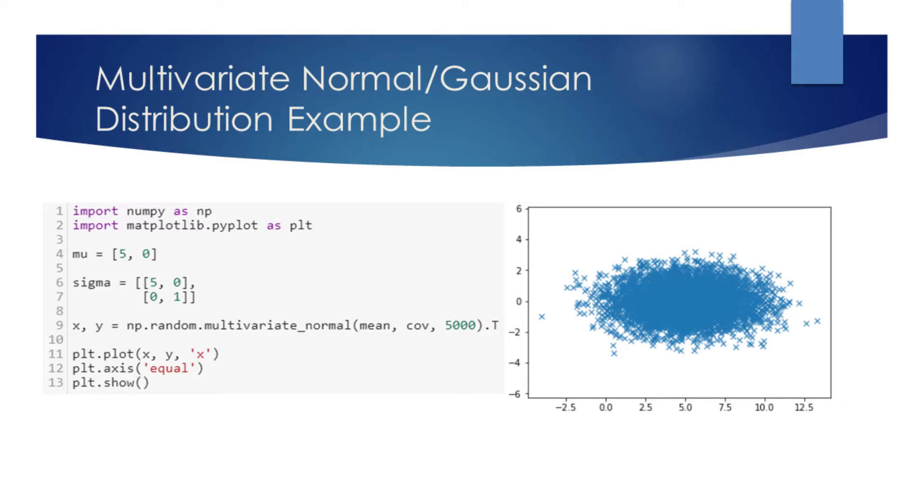The first element equals 5, so the mean of the first Gaussian variable will be 5. Similarly, the mean of the second Gaussian variable will be 0.